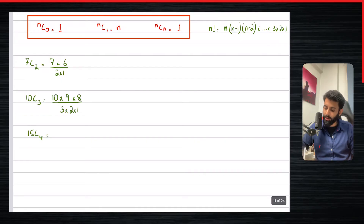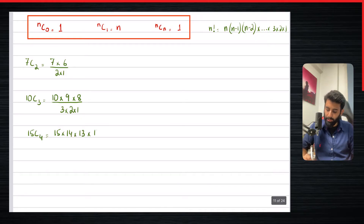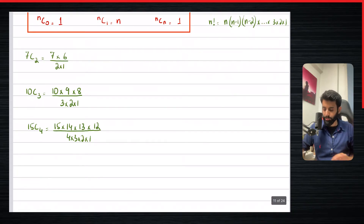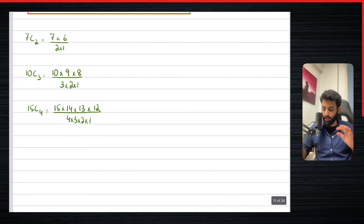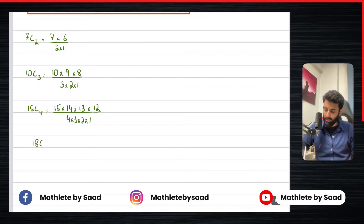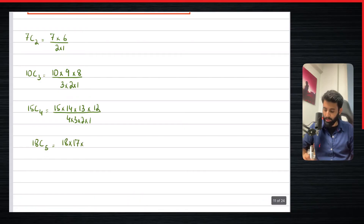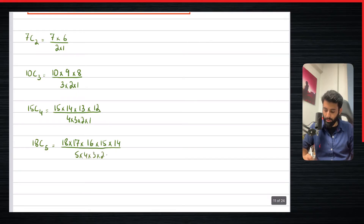Let's say you had to work out 15C4. That's going to be 15 × 14 × 13 × 12 — you stop there because you have four terms in the numerator — divided by four factorial, which is 4 × 3 × 2 × 1. Then you can simplify: cross out the four and three with the 12, simplify two and 14, and so on. One more example: 18C5. We start with 18, then 17, 16, 15, then one more to make five terms, divided by five factorial: 5 × 4 × 3 × 2 × 1.